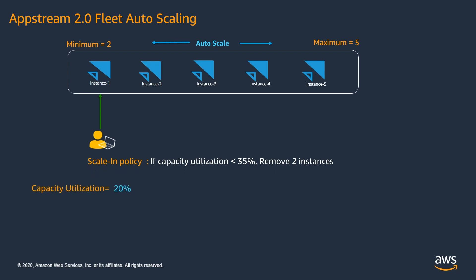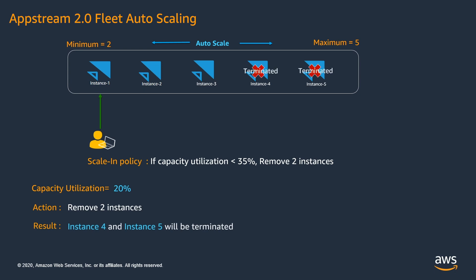As you can see, since only 1 user is connected to the fleet, the current capacity utilization is at 20%. Since our scale-in policy says if the capacity utilization is less than 35% remove 2 instances, in this case instance 4 and instance 5 will be terminated. You can see both instance 4 and instance 5 being terminated from the fleet.